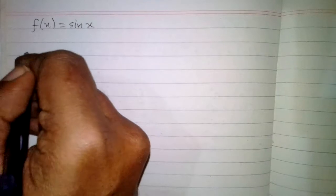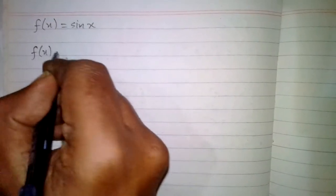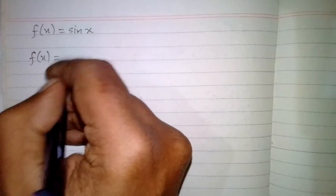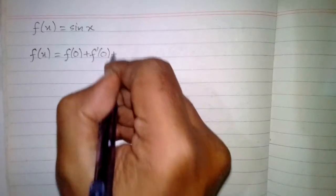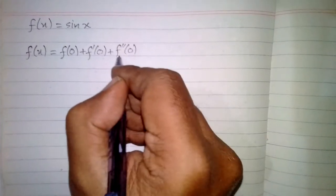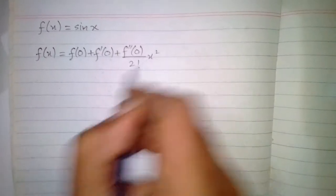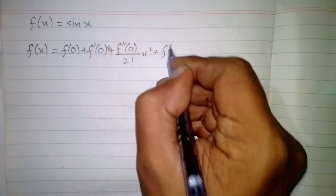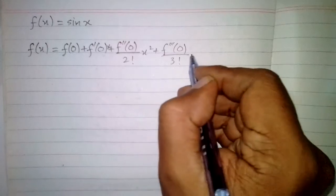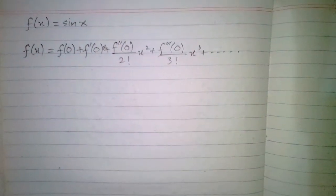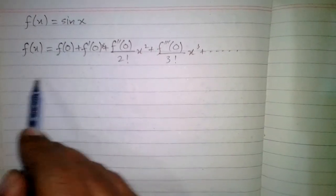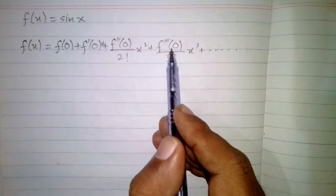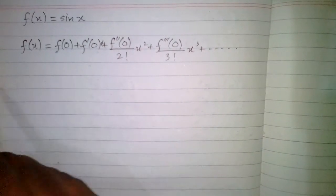In this video we will find the Maclaurin series of the function sine x. The Maclaurin series of f(x) is: f(0) plus f'(0) times x plus f''(0) upon 2 factorial times x squared, then plus f'''(0) upon 3 factorial times x cubed, and so on. Here f', f'', f''' are the first, second, and third derivatives of f(x).